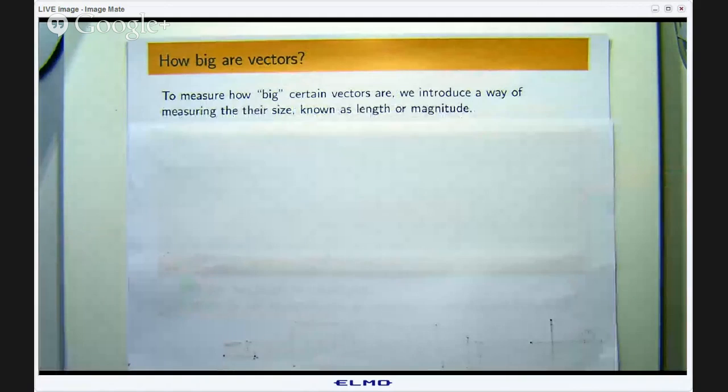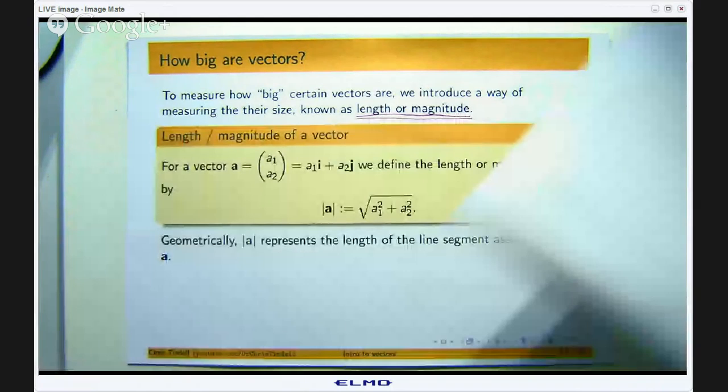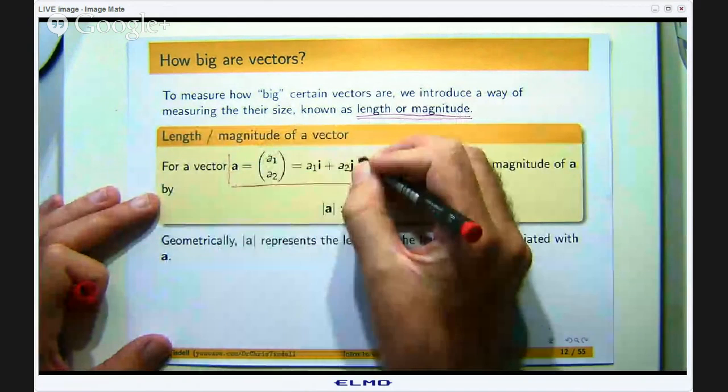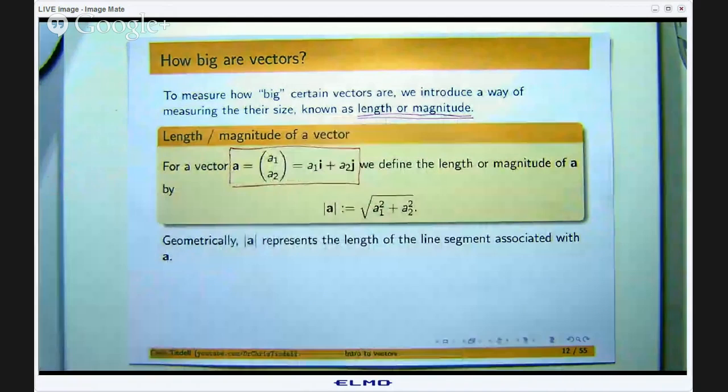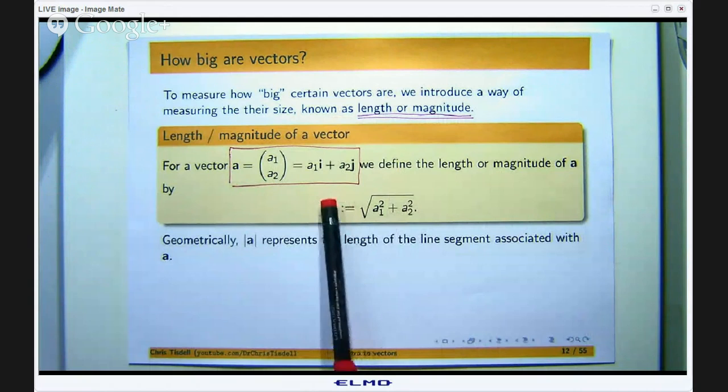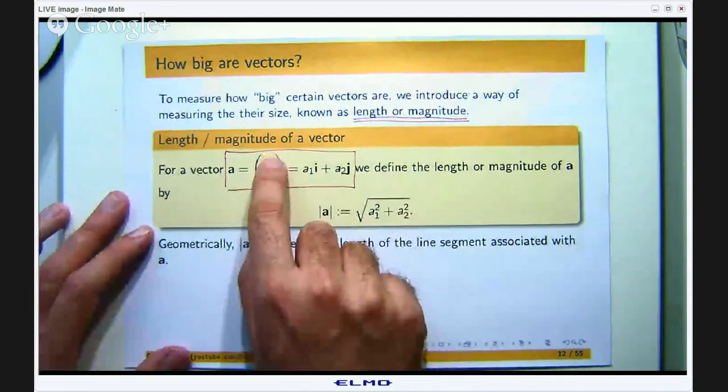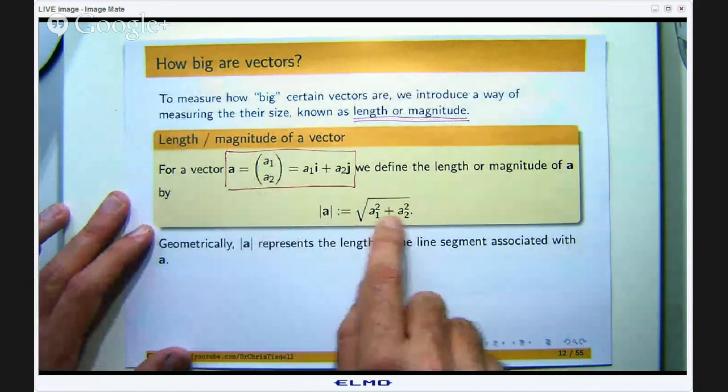Okay so let us get on to today's presentation. The first question is how big is a vector? So what I am going to do is introduce a way of measuring the size of a vector known as the length or the magnitude. Alright so suppose I have a vector here, I have written some vector in the xy plane a, here is its column form and here is its form. We define the length or magnitude of a by these two vertical lines around the vector and it is defined as just you square these components, add them together, and you take the square root.